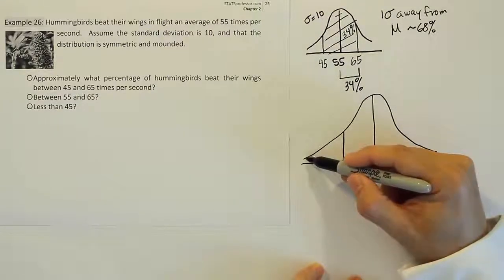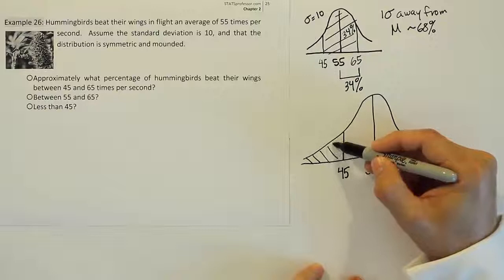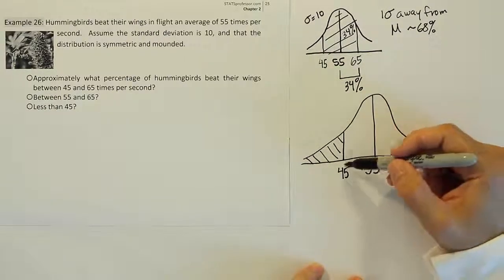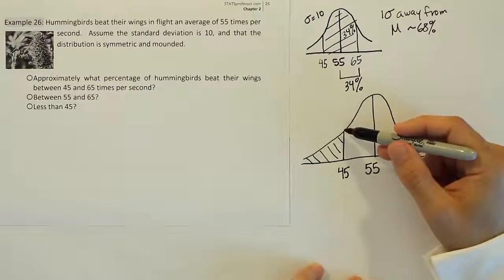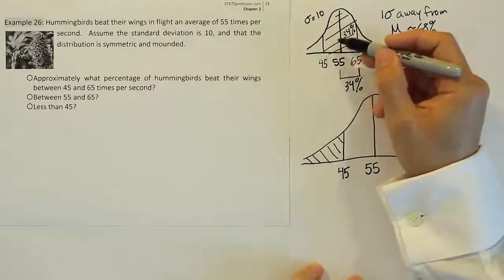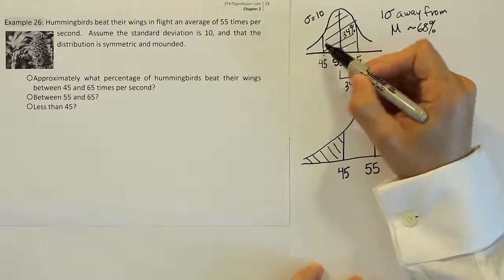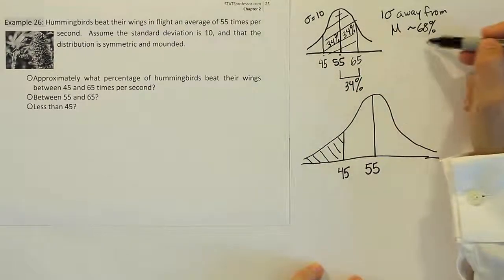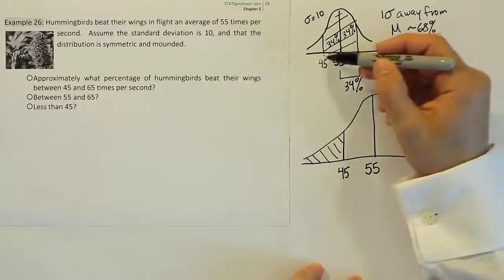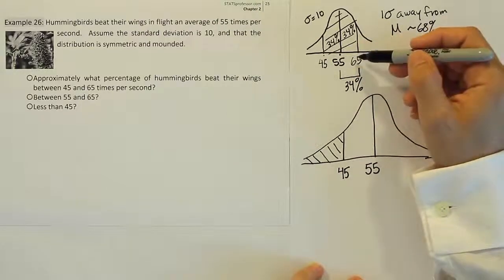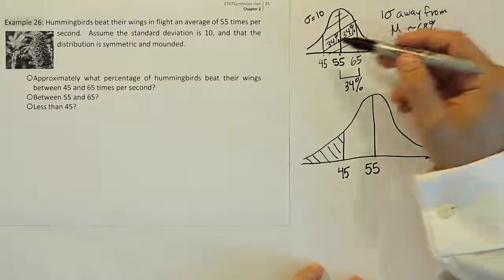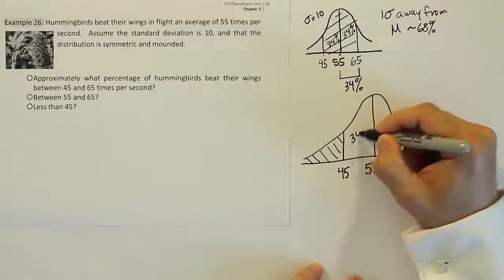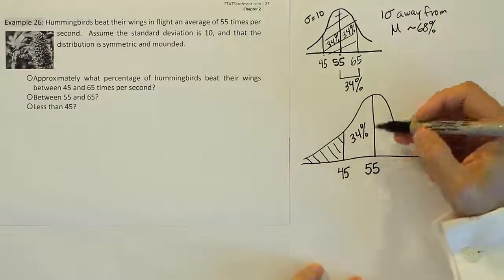But they want to know less than. They're looking for this part, they want to know what's here. Well, we don't actually have a direct way to get that. But we do know that looking at this drawing above, between 45 and 55 must be 34. We said this because 68% was between one standard deviation away from the mean. So between 45 and 65 there was 68% of the data, half of it's 34. So that means this part here on our drawing, the same part here, is 34%.